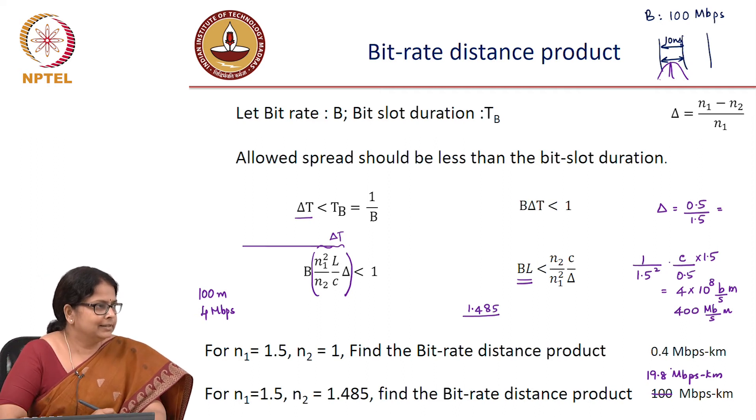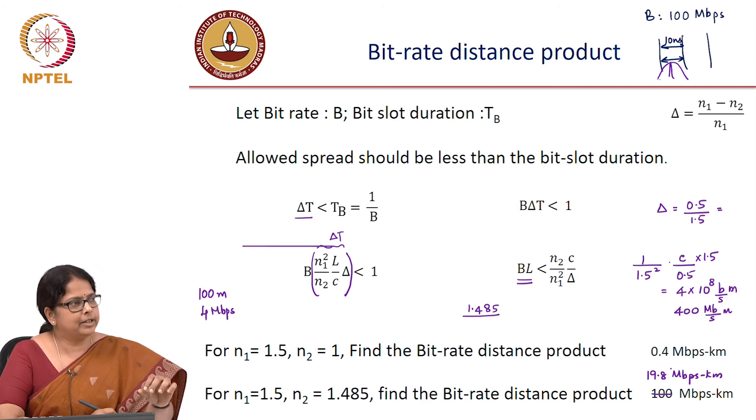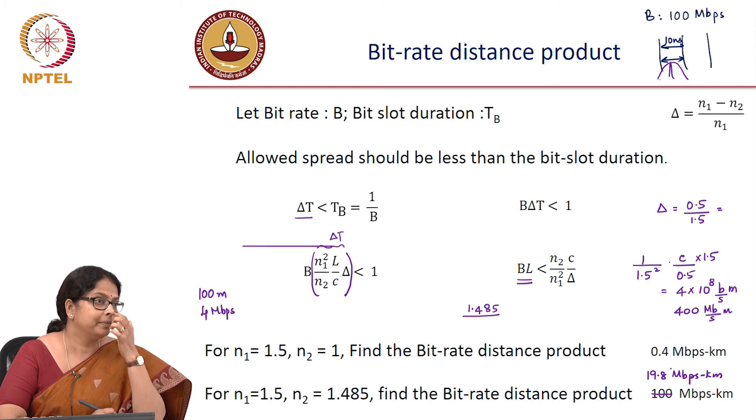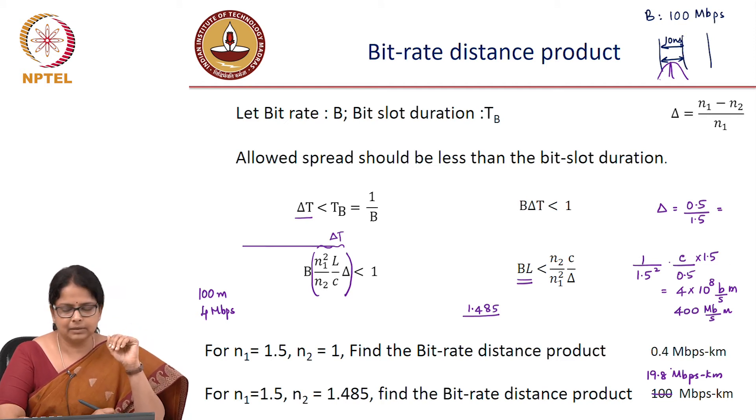When you added a cladding which is of a higher refractive index, your bit rate distance product increased. This is one reason why we need cladding. Why cannot I just have a core? That also satisfies the condition for total internal reflection. This is one reason for adding a cladding and cladding of specific refractive index is to increase your bit rate distance product. Of course there are other reasons for that, but this is one reason. So this is about multimode fibers.